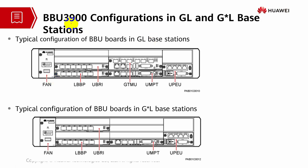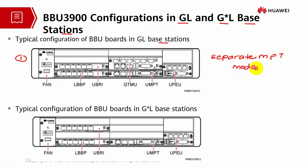BBU 3900 series configuration has two modes. One is the GL mode, another one is G times L base station. The first difference is that the BBU board will be installed in a separate MPT mode. They have two types of MPT board: the GTMU and the UMPT card. The GTMU takes care of GSM mode, and the UMPT card takes care of LTE mode.